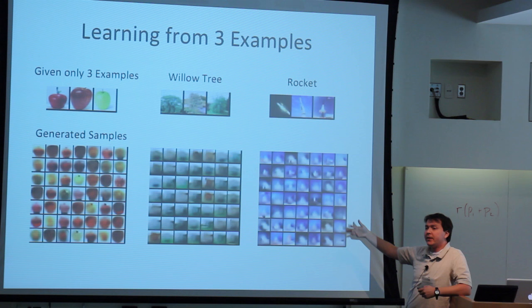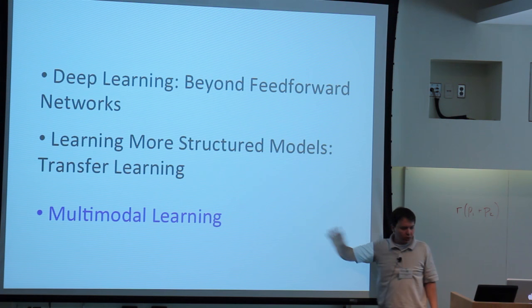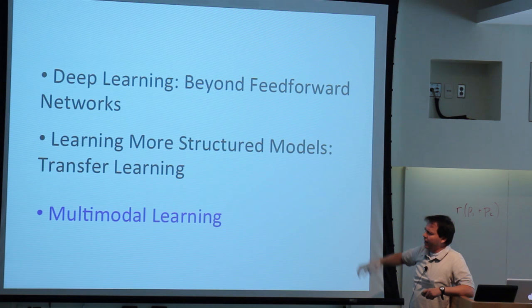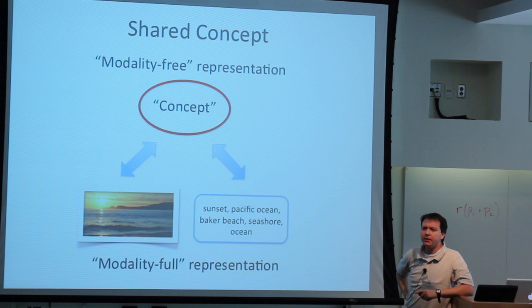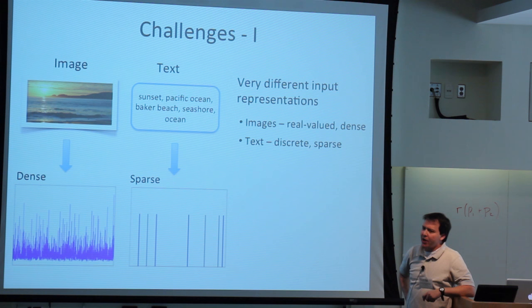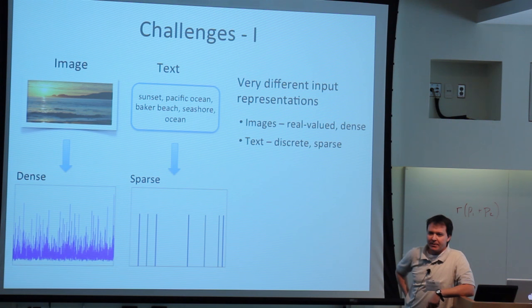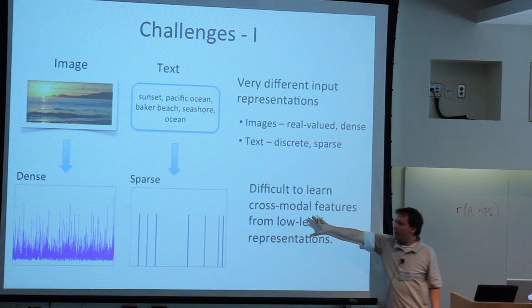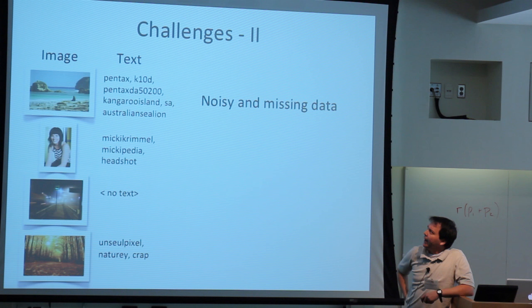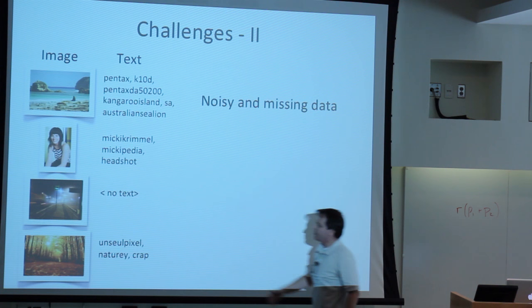Finally, whenever we're trying to do transfer learning or structured learning, taking multiple modalities into account is a big challenge. In particular, we'd like to take images and text and find a shared representation. One challenge is that images are typically represented as dense vectors while text is sparse — word counts. Building representations from low-level features across these modalities is difficult. A second challenge is dealing with noisy or missing data: sometimes an image has no text associated with it, or the text is meaningless.